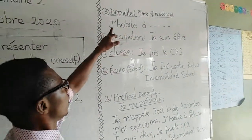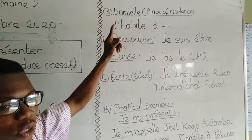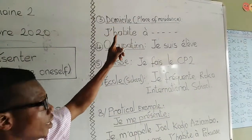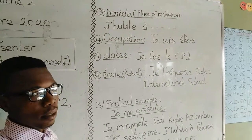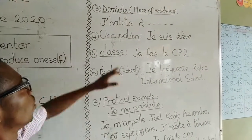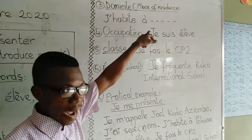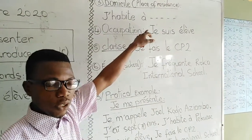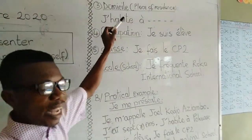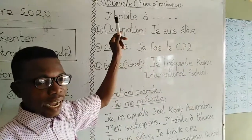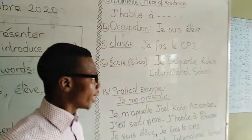The next point is to tell the person your domicile — that is, the place of residence, where you stay. In French, we say j'habite à. If you live in Apoquyasi, you say j'habite à Apoquyasi. J'habite à Amasaman. J'habite à Achimota, and so forth.